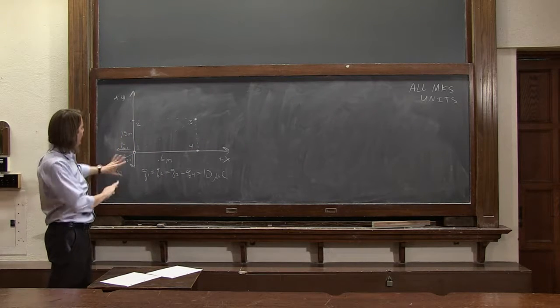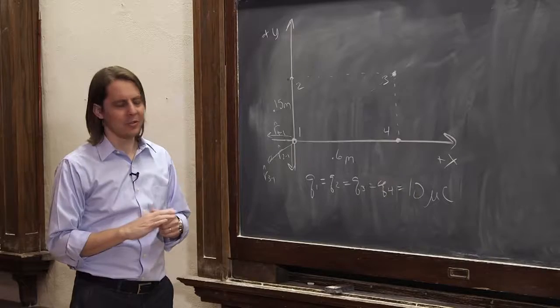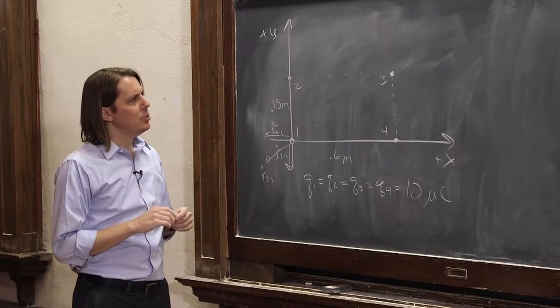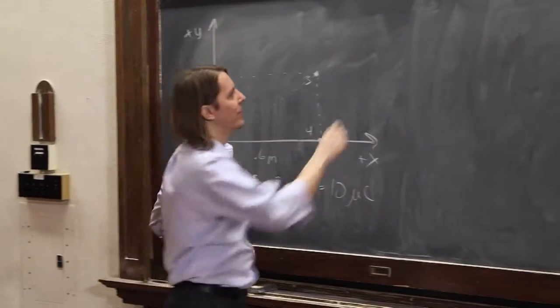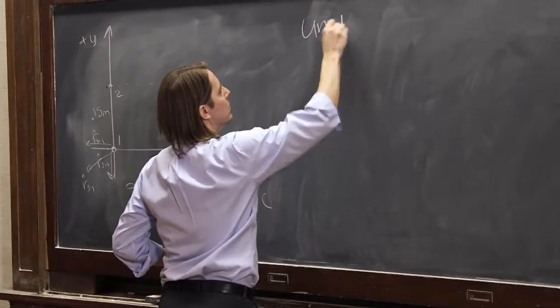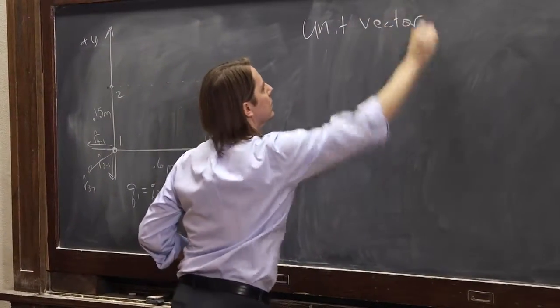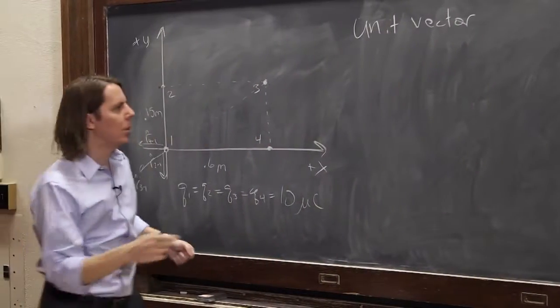To do it this way, we're going to try to do it without all that inspection, all that thinking about which way things point. And to do it, you really have to be really good with unit vectors. So let's look at our unit vector again. For example, let's do r hat 2,1.